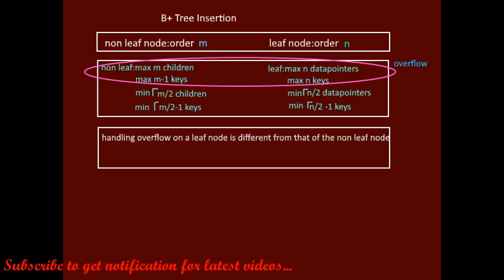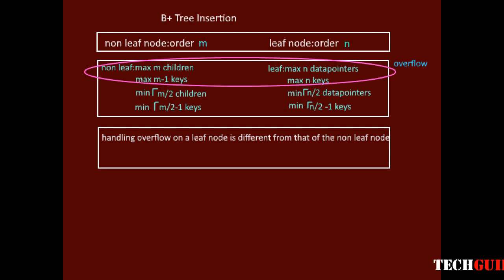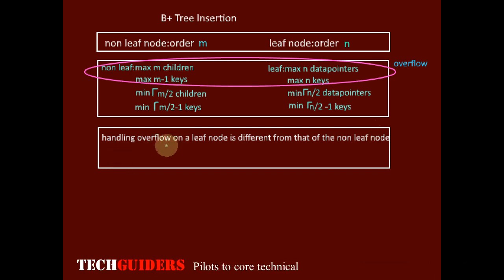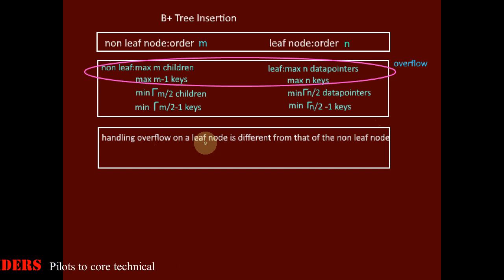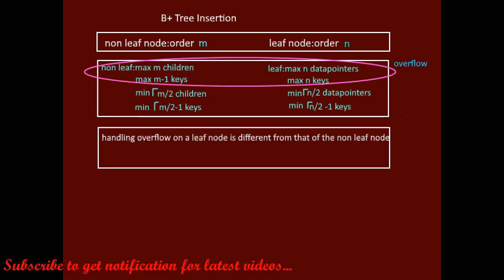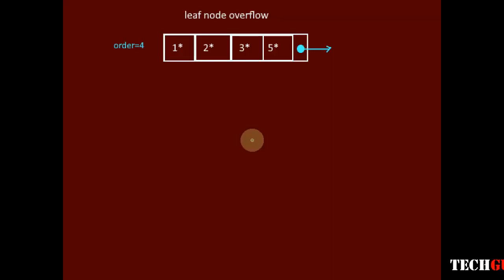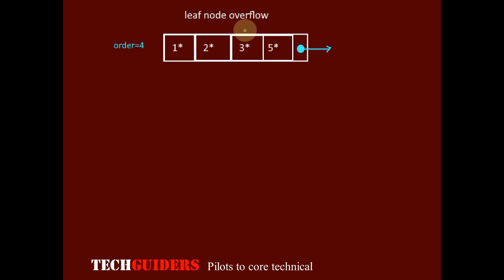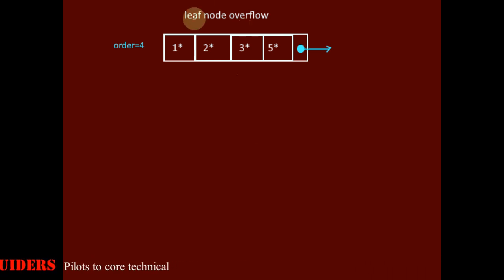In a B+ tree, since the structure of the leaf node is different from the structure of the non-leaf node, how overflow is handled on a leaf node is different from that of the non-leaf node. So first, let's consider B+ tree insertion on a leaf node and how the overflow on a leaf node is handled.